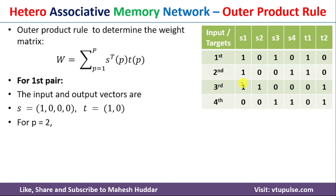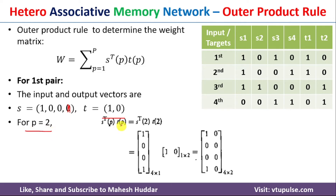For the second pair, the input is [1,0,0,1] and the target is [1,0]. With p=2, we take the transpose of S to get [1,0,0,1] as a column vector, then multiply by T2. Performing this matrix multiplication gives us the weight matrix for the second input pair.